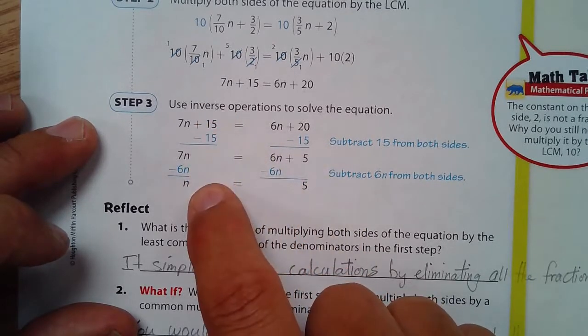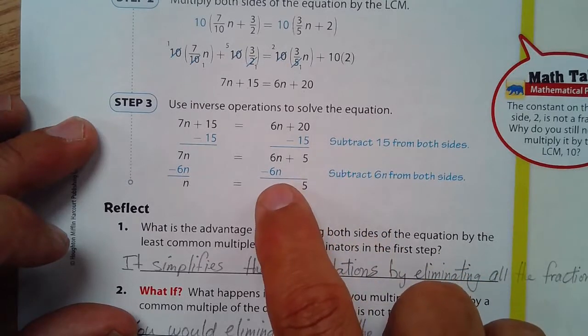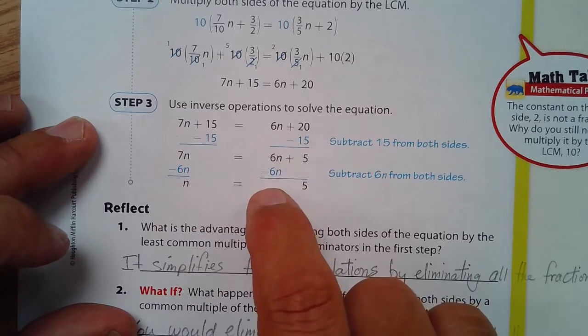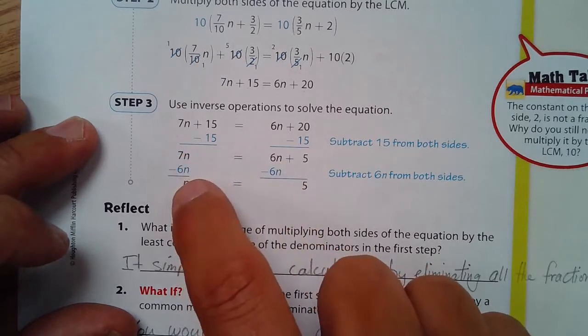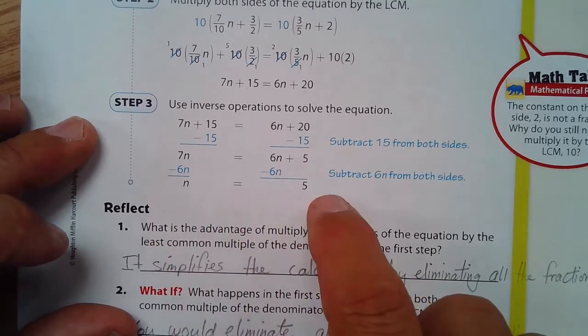This is eliminated and 20 minus 15 is 5. And then we could subtract 6n from both sides using the additive inverse here to eliminate that side. And 7n minus 6n is 1n or just n. And the answer is n equals 5.